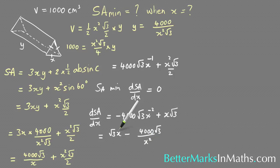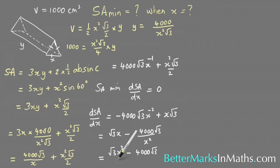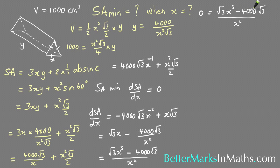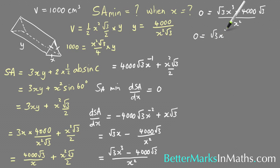Multiplying the first term by x squared over x squared gives a common denominator of x squared. Combining the terms gives root 3 x cubed minus 4000 root 3, all over x squared. Setting the derivative equal to zero means we just set the numerator equal to zero, since we can multiply both sides by x squared.